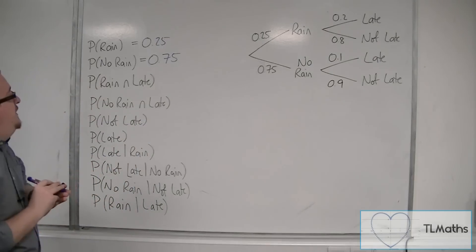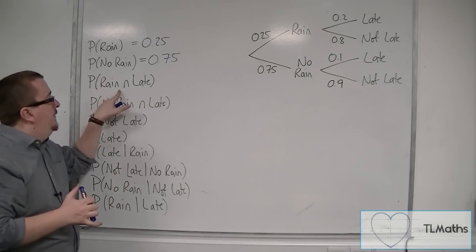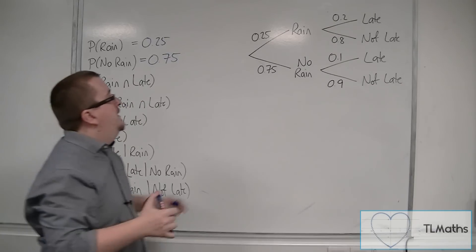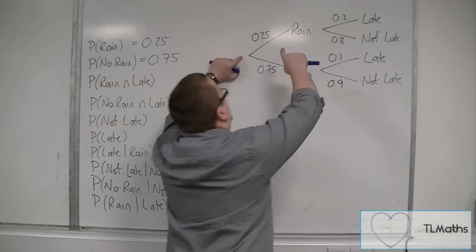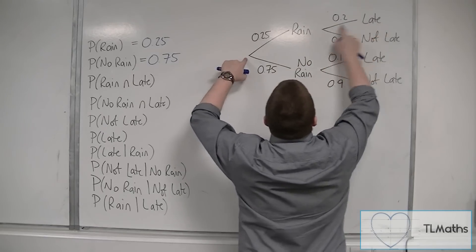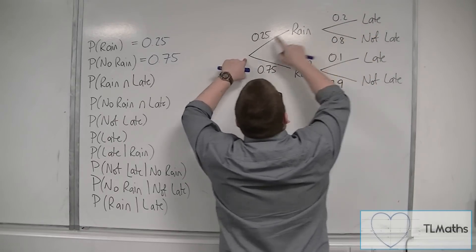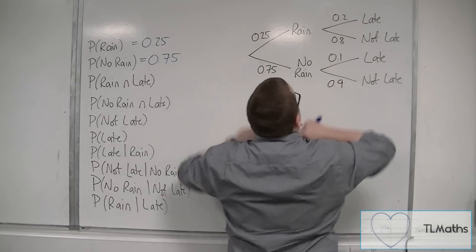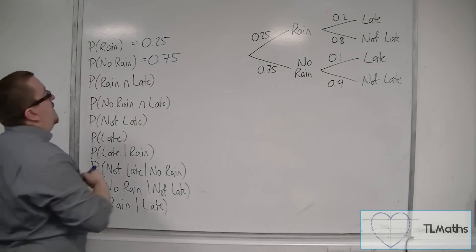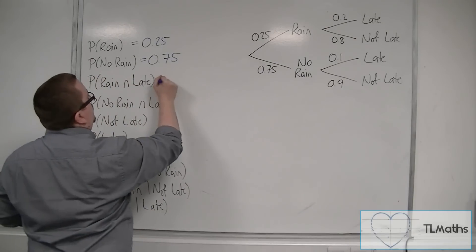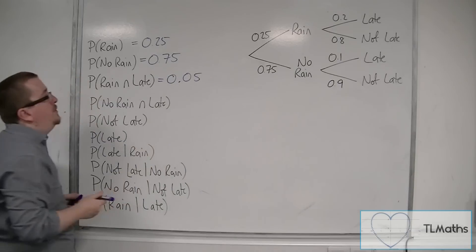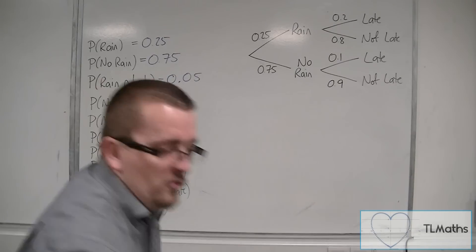Now, the probability that it rains and the person is late — we multiply along the branches. So we have 0.25 times 0.2, and that gives us 0.05. So you multiply along the branches.